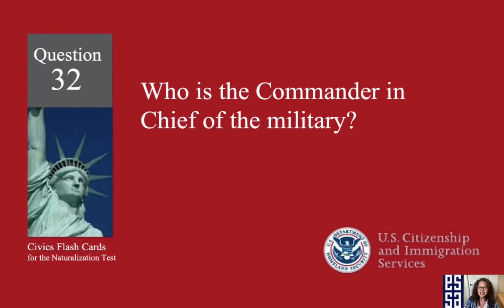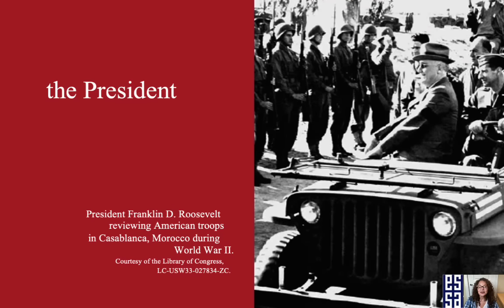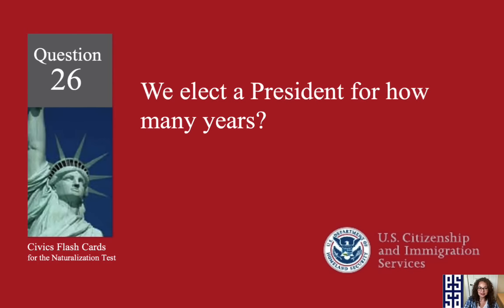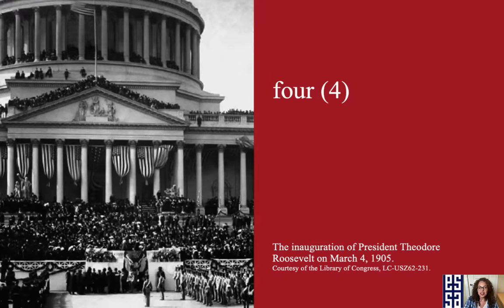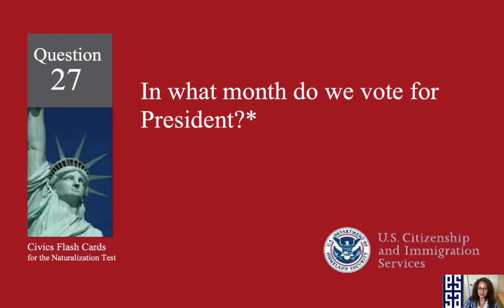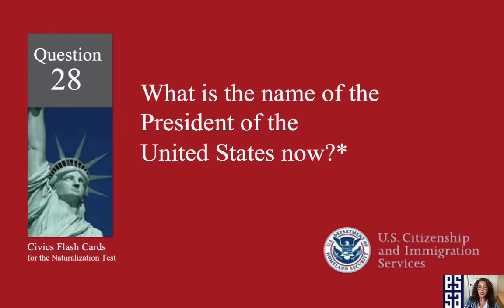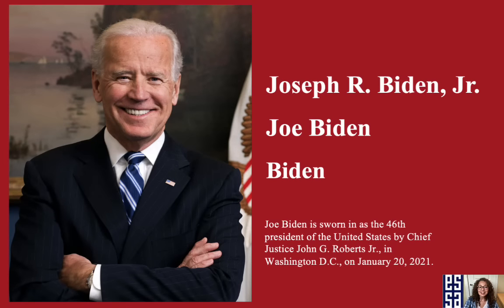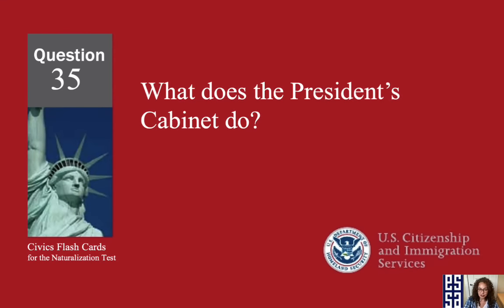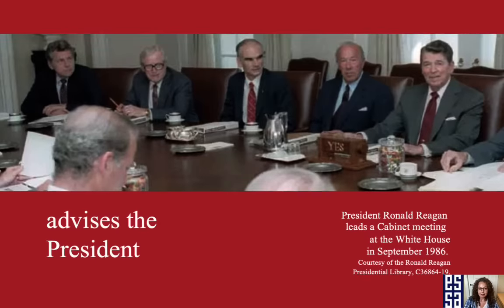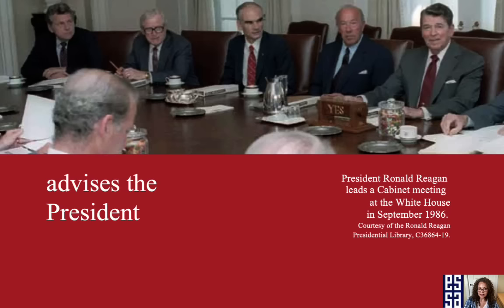Who is commander-in-chief of the military? The president. We elect a president for how many years? Four years. In what month do we vote for president? November. What is the name of the president of the United States now? Joe Biden. What does the president's cabinet do? It advises the president.